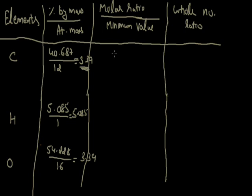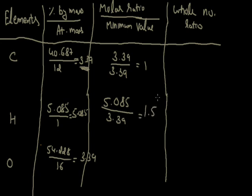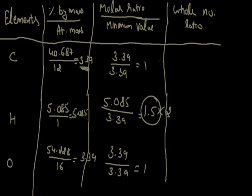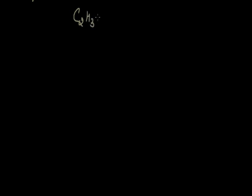Dividing each molar ratio by the minimum value 3.39: carbon gives 1, hydrogen gives 5.085 divided by 3.39 which is 1.5, and oxygen gives 1. Since the ratio is not a whole number — hydrogen gives 1.5 — we multiply all ratios by 2. The final ratio becomes 2:3:2 for carbon, hydrogen, and oxygen respectively. The empirical formula is therefore C2H3O2.